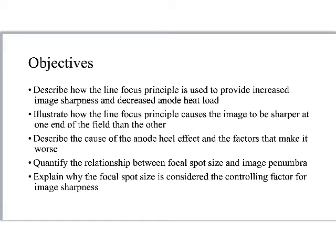So it does two things: it allows us to decrease the heat load to the anode and improves image sharpness. It's not a perfect solution, but it's pretty good. We'll talk about some of its imperfections, like how the line focus principle causes the image to be sharper at one end of the field versus the other. I've already had some student questions about that. That is not to be confused with the anode heel effect — that is a shortcoming of the line focus principle as we use it in the x-ray tube.